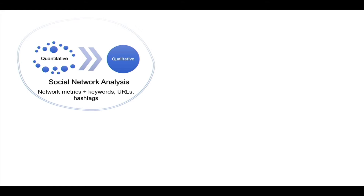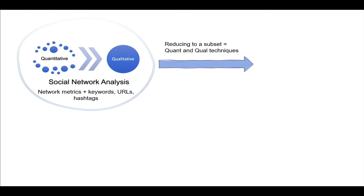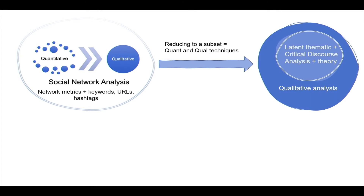While there are ample studies using social network analysis via social media platforms — particularly with Twitter — there are far fewer that reduce the corpus into smaller subsets for qualitative analysis. When we do this additional step it helps enhance our understanding of what's being said beyond the keywords and the information being shared via hyperlinks. With a smaller yet relevant subset we can look at content in terms of discourses and themes — what is being said but also how.